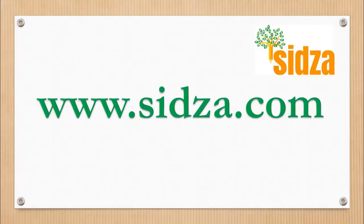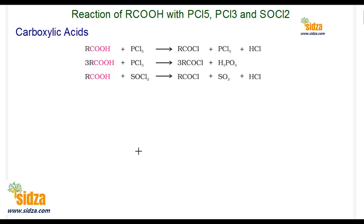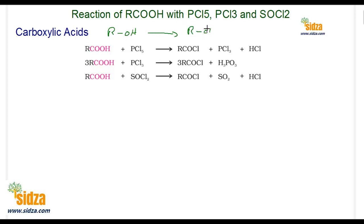Welcome to sitza.com. Carboxylic acids react with reagents like PCl₃ (phosphorus trichloride) and thionyl chloride. Just like in alcohols, where you can replace an OH group with chlorine to get an alkyl halide (RCl) when you react the alcohol with PCl₅, PCl₃, or thionyl chloride.